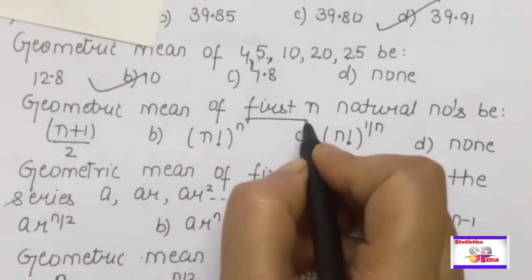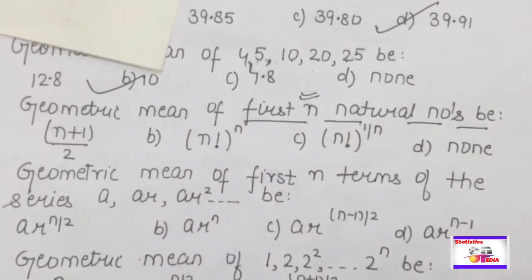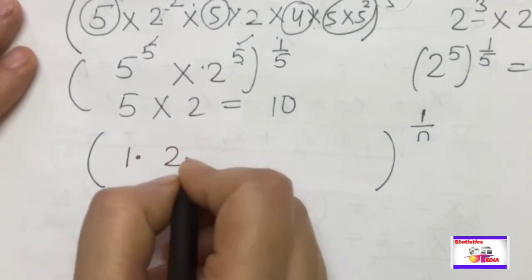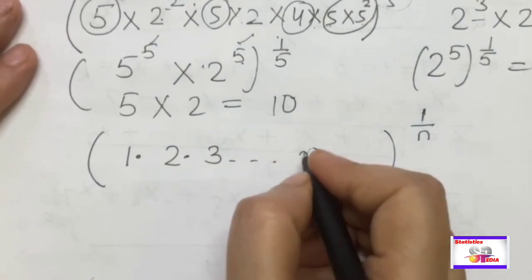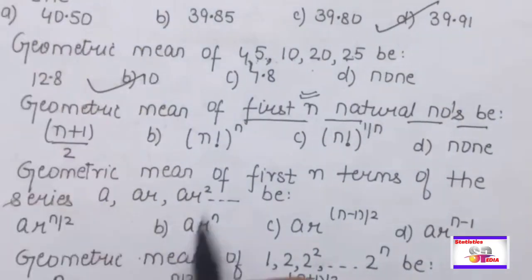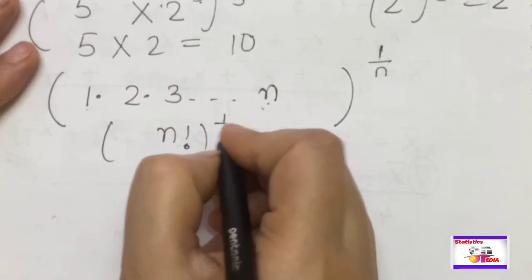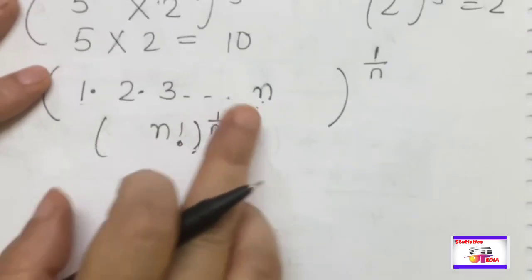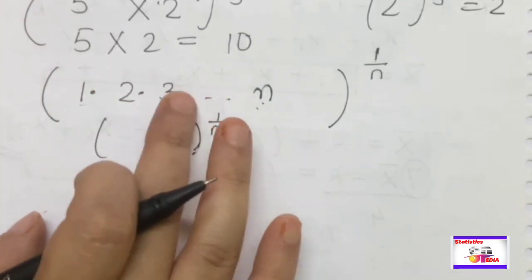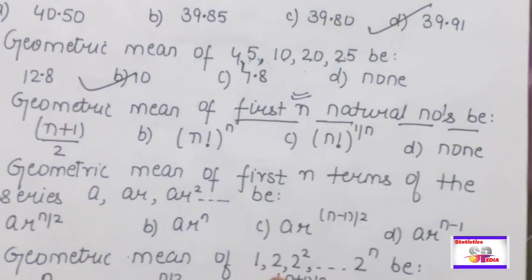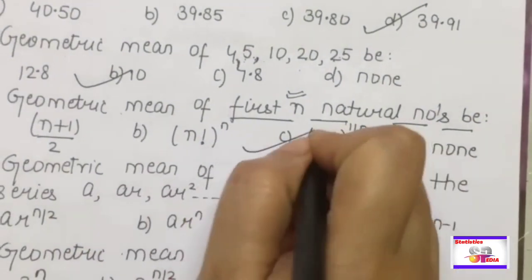For the geometric mean of the first N natural numbers 1, 2, 3, ..., N: GM = (1·2·3·...·N)^(1/N) = (N!)^(1/N). The product 1×2×3×...×N is N factorial. So GM of first N natural numbers = (N!)^(1/N). This is the answer.